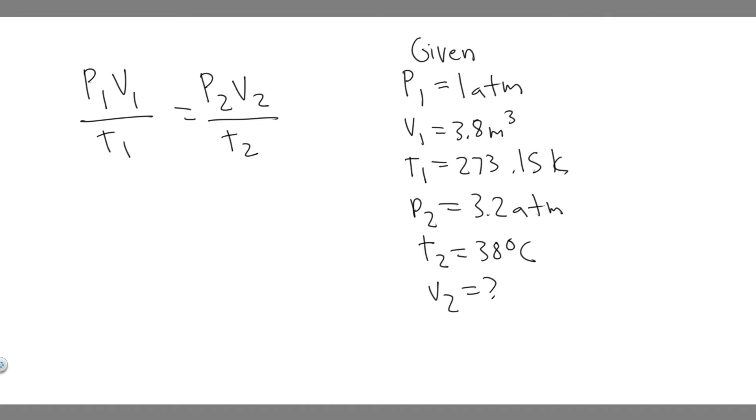And so the first part, there's going to be a pressure, a volume, and a temperature. And we know that the pressure, the volume, and the temperature is going to equal the pressure, the volume, and the temperature at the end. So this is the formula we have here: P1V1 over T1 equals P2V2 over T2. And what we're doing is solving for the volume of the second state.